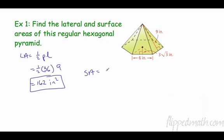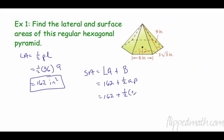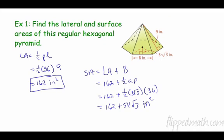Now for the surface area: lateral area plus the area of the base. The base is a regular hexagon, so we use the formula one-half times apothem times perimeter. We have 162 plus one-half times 3√3 times 36. Multiplying one-half times 3 times 36 gives 54, so we get 162 + 54√3 as the exact answer.